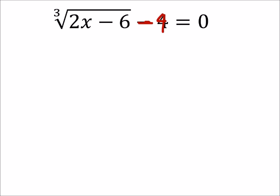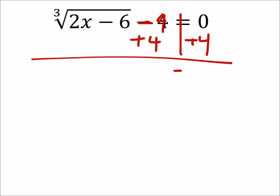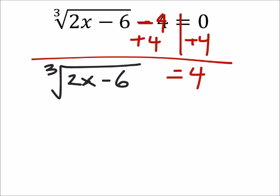Kind of like as if you were manipulating an equation for a specific variable, we're manipulating it for the radical. So how do I get rid of that minus four? I would add four to both sides. And that would give me zero plus four is four. Alright, so this is what we have now.